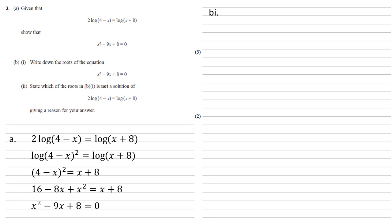For part b we need to write down the roots of the equation x² - 9x + 8 equals 0. For this we can either put it into the calculator and allow the calculator to solve it, or we can factorise to get (x - 1)(x - 8) equals 0. Either way we get the solutions x equals 1 and 8.